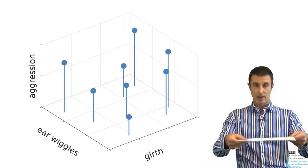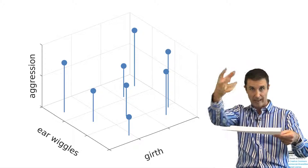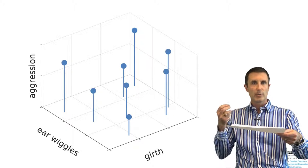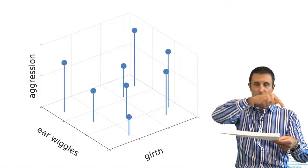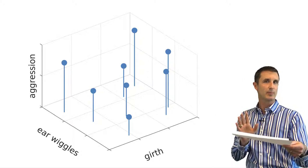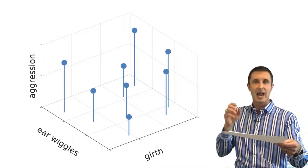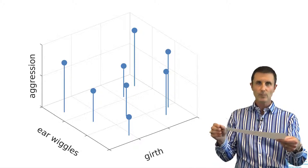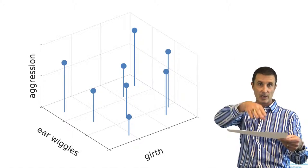So I have these points and they each have a height to them — a cloud of points sitting in here. The goal is I want to produce a rule that predicts the aggression of the hippopotamus from the girth and the number of times it wiggles its ears. Because when I go out into the field and I meet a new hippopotamus, I can measure its girth from a distance and count the times it wiggles its ears, and I want to know should I be able to approach the hippopotamus or not. I need a function that maps from this two-dimensional space up to a height.